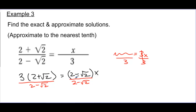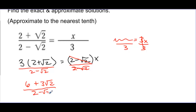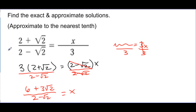So I'm going to divide both sides by (2 minus the square root of 2). Nothing's going to cancel — you can't cancel out parts of addition expressions. I'll distribute that 3 in to make it look a little nicer: 3 times 2 gives me 6, plus 3 square root of 2, all over (2 minus the square root of 2). That's what x is — so that's solved for x. The only thing we need to do to answer the problem is find the exact and approximate solutions.